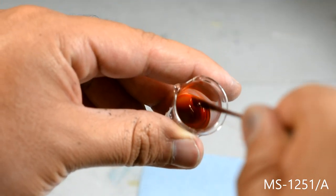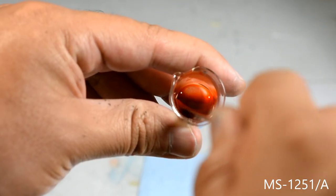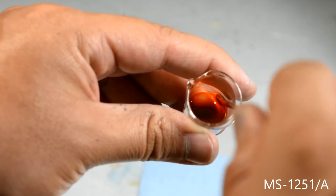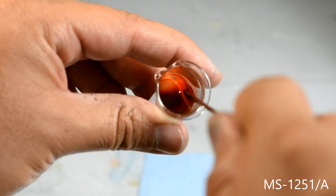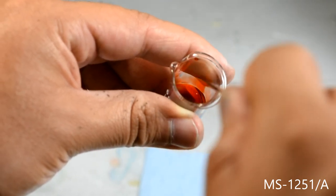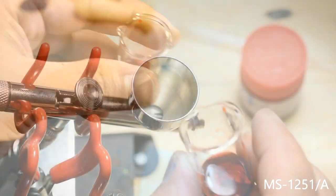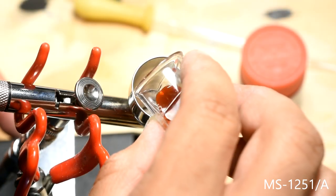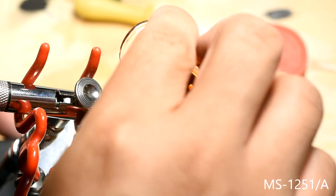The mix should have a nice milky consistency. I load the paint into the airbrush and set my air pressure to 20 psi.